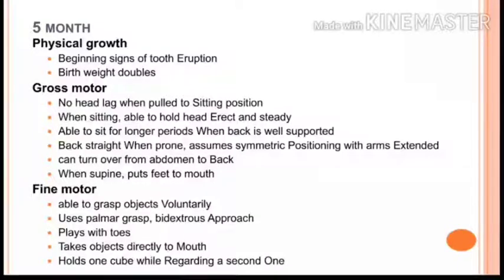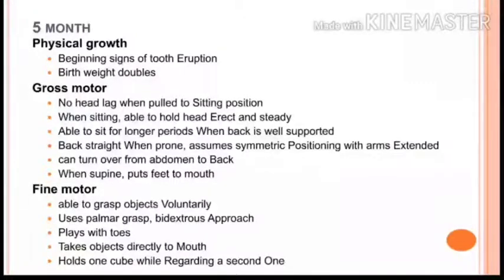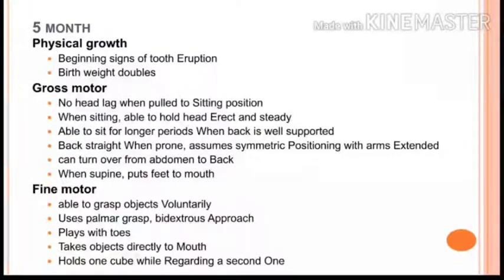In fine motor development at five months, the baby is able to grasp objects voluntarily using the palmar grasp with a bidextrous approach — meaning the baby uses both hands to reach an object. The baby plays with toes, takes objects directly to the mouth, and holds one cube while regarding a second one.